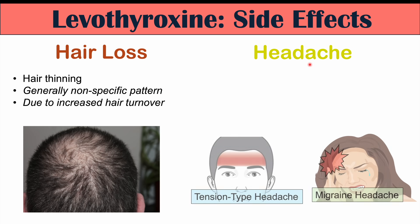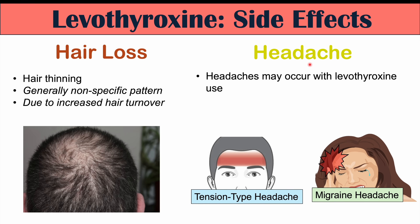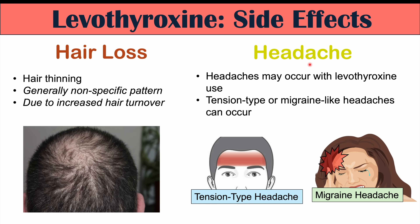Headaches are another potential side effect of levothyroxine use. Different types can occur depending on the patient — sometimes tension-type headaches presenting as bilateral, band-like pain around the head, or migraine-like headaches that are unilateral, pounding, and accompanied by other symptoms such as light sensitivity.